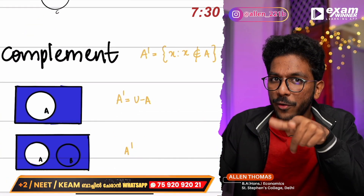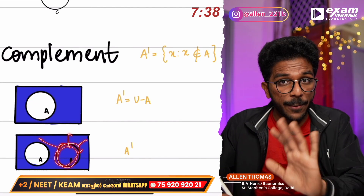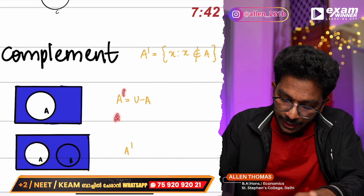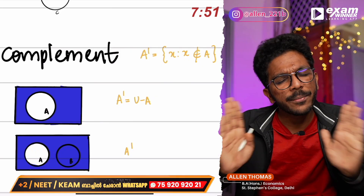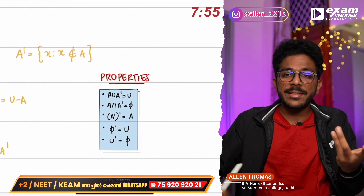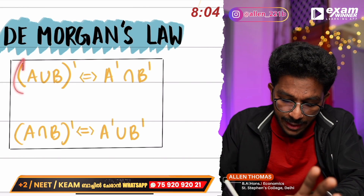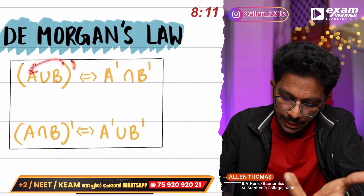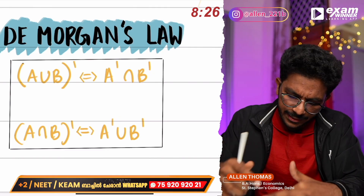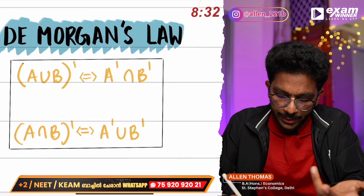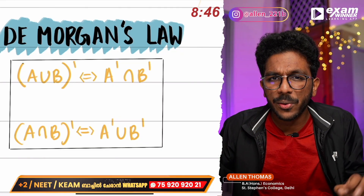The complement: A complement means everything not in A within the universal set. A complement is written A'. In the entire universe, everything not in A is the complement. De Morgan's laws: (A union B) complement equals A complement intersection B complement. And (A intersection B) complement equals A complement union B complement. De Morgan's laws are very important to learn.